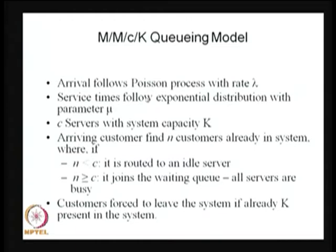But if the system is full — that is, C customers are under service and K minus C customers are waiting in the queue — then whoever comes will be rejected and forced to leave the system. Therefore you have both waiting and blocking due to finite capacity. We always choose K such that K is greater than or equal to C. If K equals C, then it is a lost system; if K is greater than C, then K minus C customers can wait in the queue.